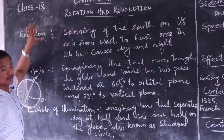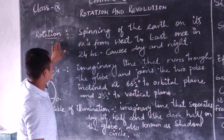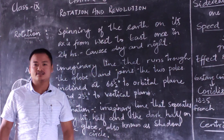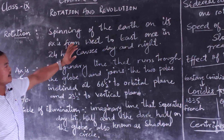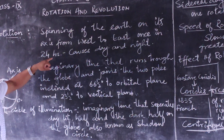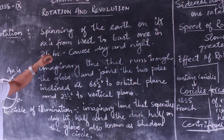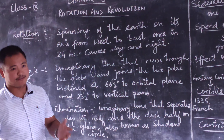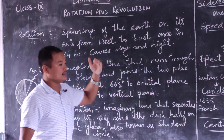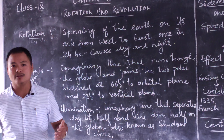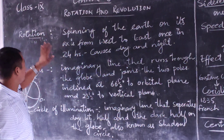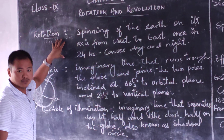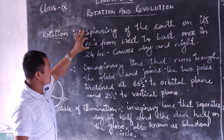We'll first discuss rotation. Rotation is the spinning of the earth on its axis from west to east, once in 24 hours, and it causes day and night. This is one of its most prominent effects — the days and nights are formed every 24 hours because of the rotation of the earth.